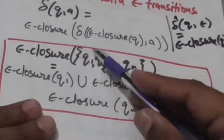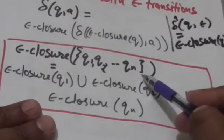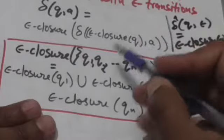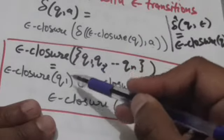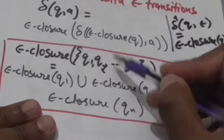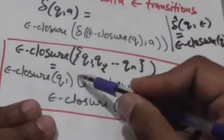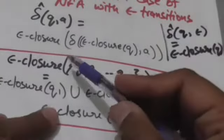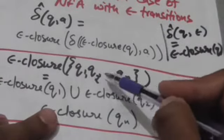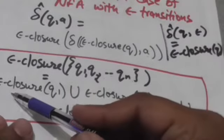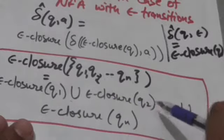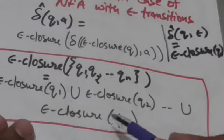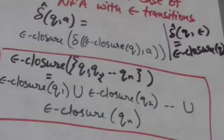Suppose we have to find out the empty closure of a set of states, and that set has states q1, q2, q3 up to qn. Then we will find the empty closure of each state of the set individually, and then take the union of all of them. So the empty closure of a set {q1, q2, ..., qn} equals ε-closure(q1) ∪ ε-closure(q2) ∪ ... ∪ ε-closure(qn).